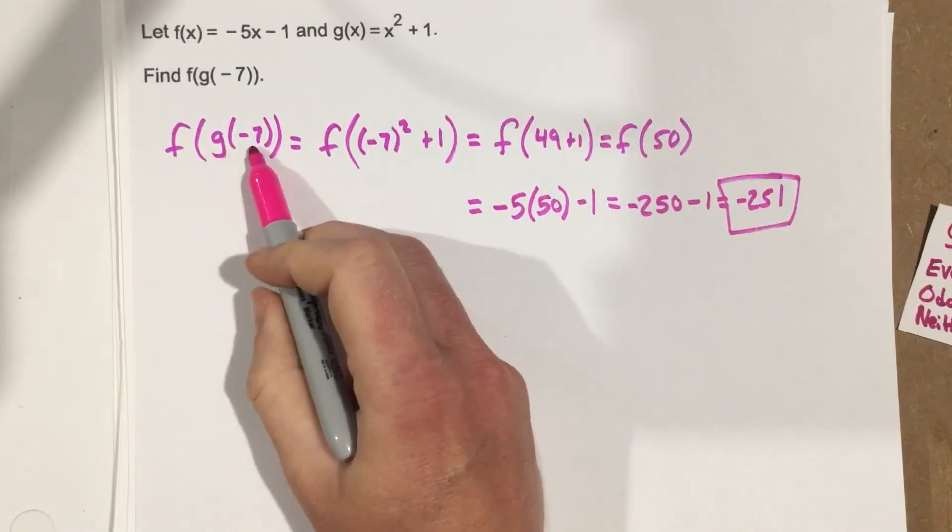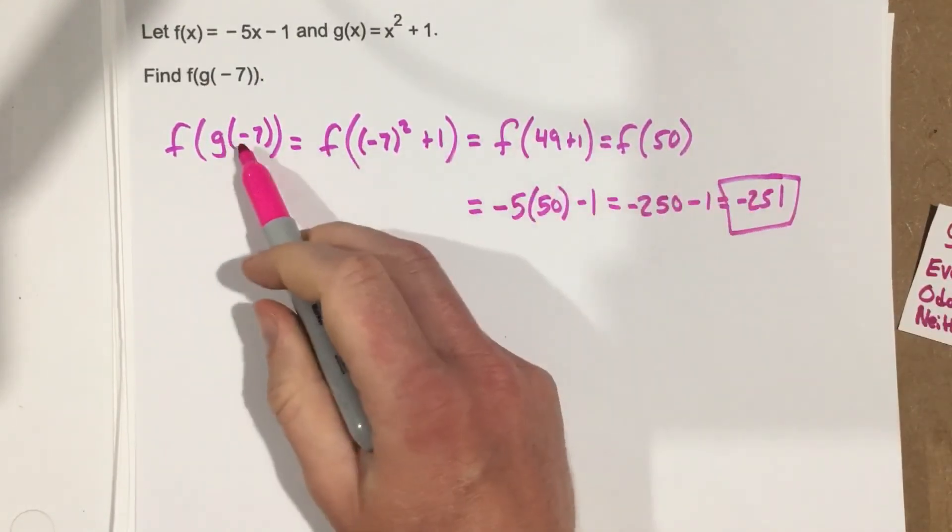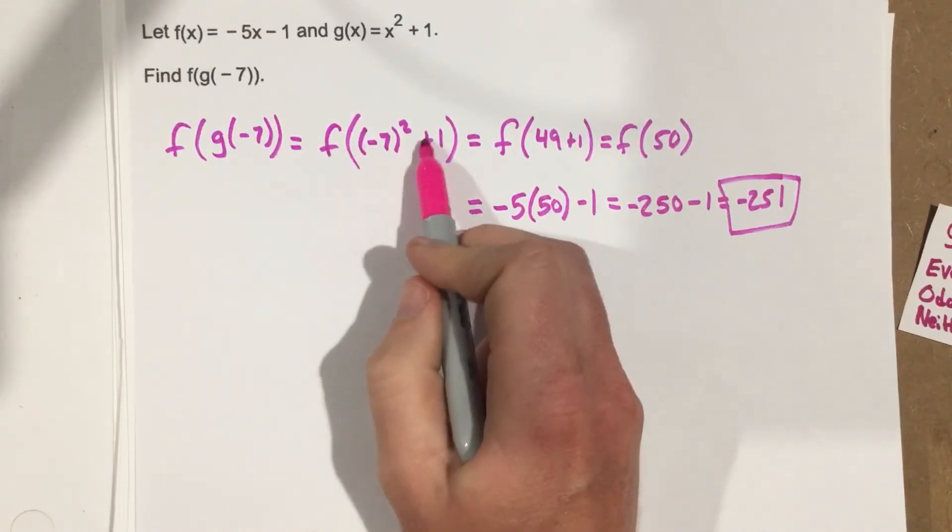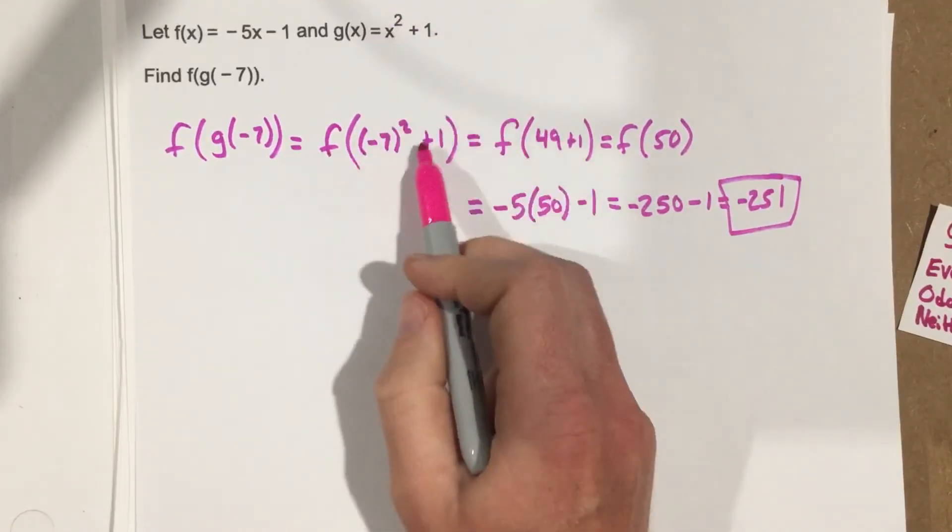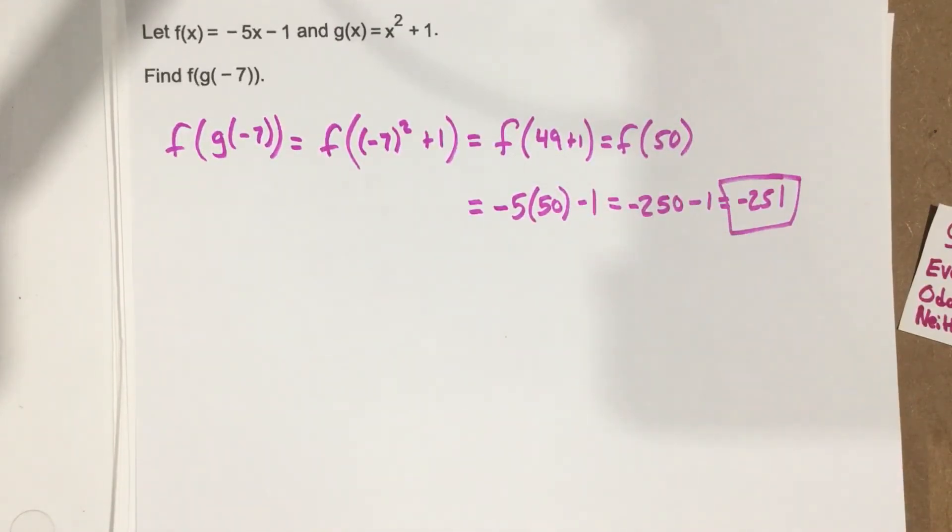So f of g of negative 7, when you plug it in, you end up with negative 251 because you plug the negative 7 into the g function. You get an output which was 50, and you plug that into the f function and you end up with negative 251.